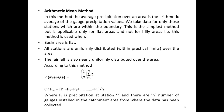According to this method, the average precipitation P_avg is equal to (1/n) × summation of P_i for i = 1 to n, that is P_avg = (P1 + P2 + P3 + ... + Pn) / n, where n is the total number of gauges installed in the catchment area from which data has been collected.